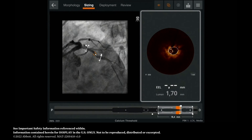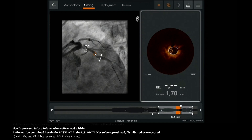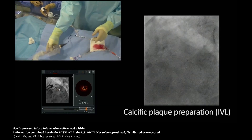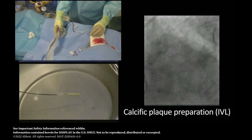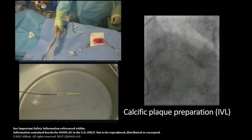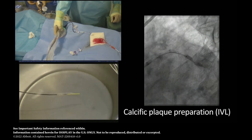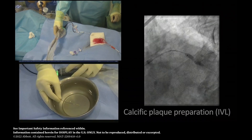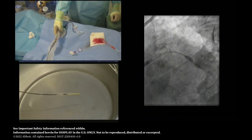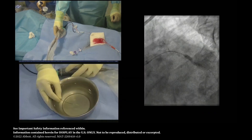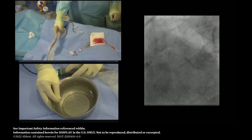Here you can see in this view the two references we have selected in white, and in yellow is the area of calcification that we're going to be treating. We go to four atmospheres. We start — we are showing you basically the way that lithotripsy works. You are seeing some images at the same time that we are performing the actual case. You may see the generation of the bubbles, the same bubbles that you see on the top.